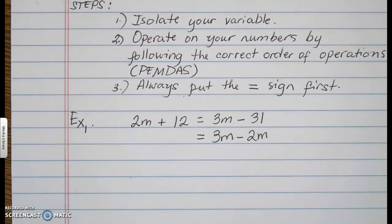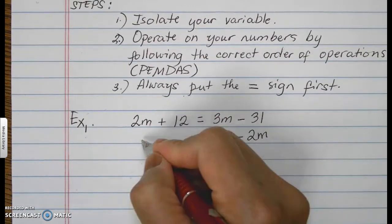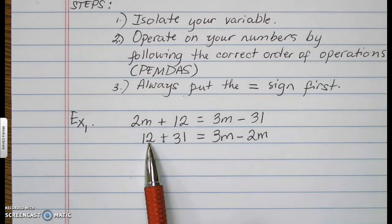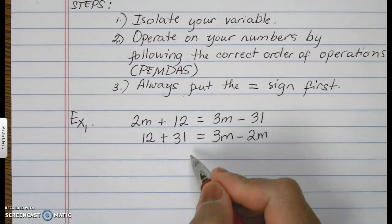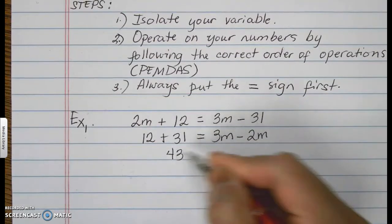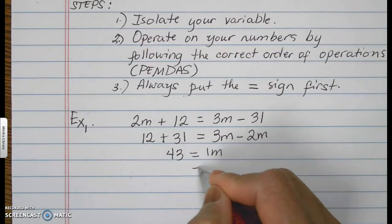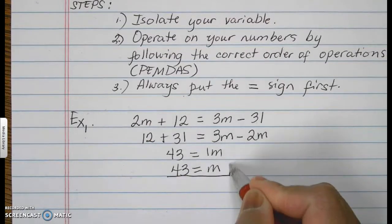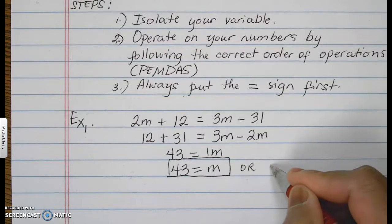Making it look like this. And now, this negative 31 has to join the positive 12, which will now turn to 12 plus 31. Now let us combine like terms. This is going to be 43 equals 1M, or M is equal to 43, which is actually the same as M equals 43.